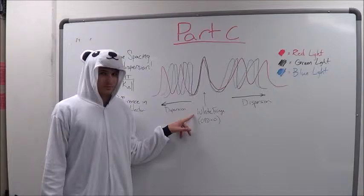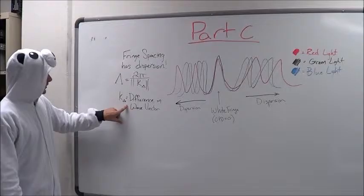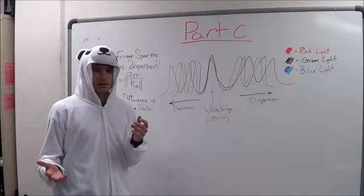This is a drawing of the pattern of white light fringes that we found from this part of the lab. As you can see in the center, when the optical path difference is equal to zero, there is a single bright white fringe. According to this equation, the fringe spacing is proportional to the difference in the wave vector, meaning that the fringe spacing has dispersion and that it's frequency dependent.